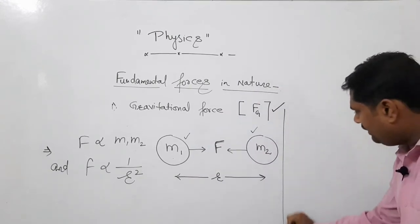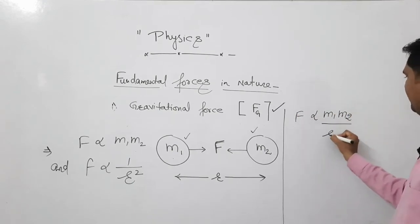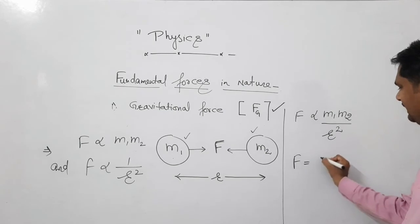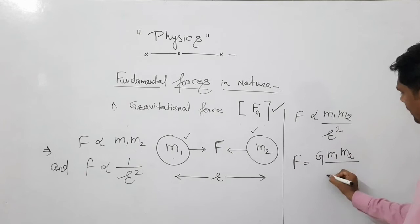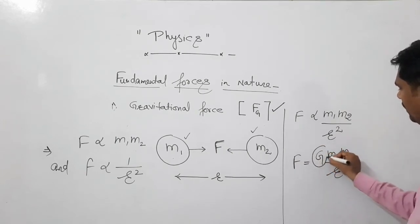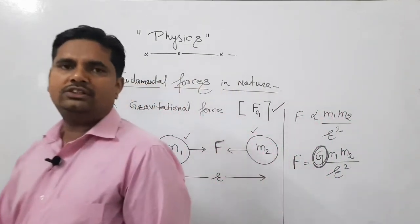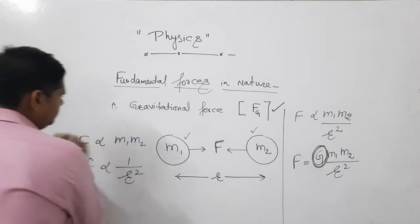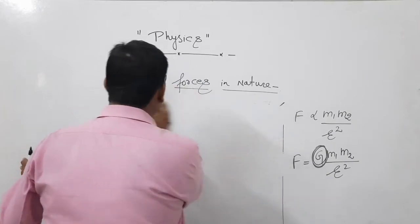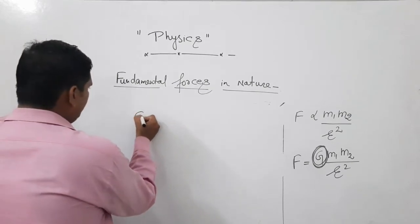Now clearly we see that force is directly proportional to the product of masses and inversely proportional to the square of distance between them. That means F equals G M1 M2 over R square, where G is called universal gravitational constant. And value of G - in Henry Cavendish's experiment this value was proven - was 6.67 into 10 raise to power minus 11.